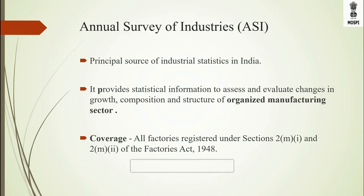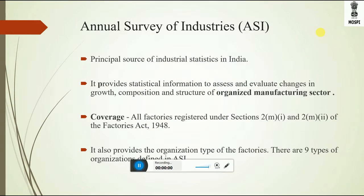These definitions belong to the Factories Act 1948. ASI also provides the organisation type of factories. There are nine types of organisations defined in ASI: individual proprietorship, partnership, limited liability partnership, government company public, government company private, non-government company public, non-government company private, cooperative societies, and others.